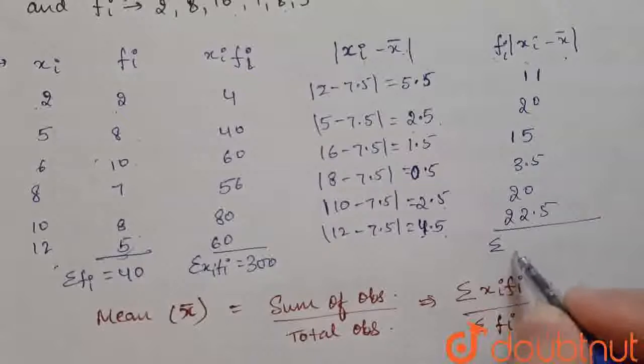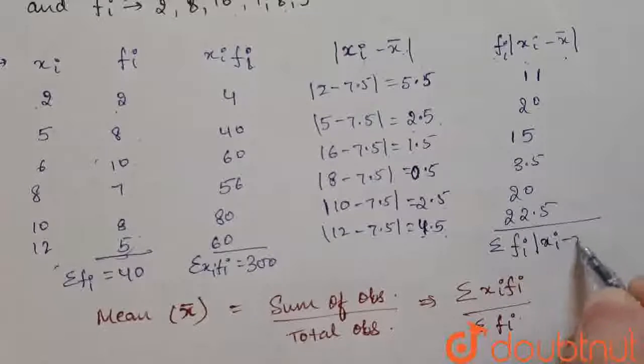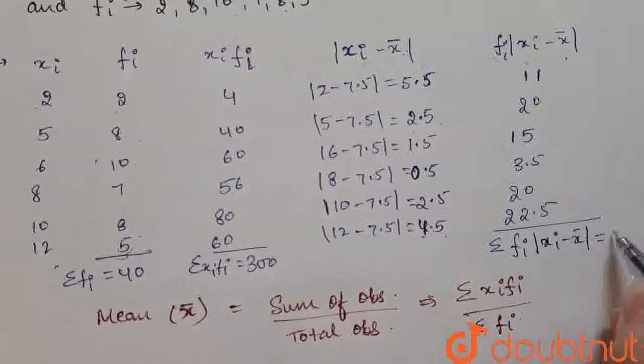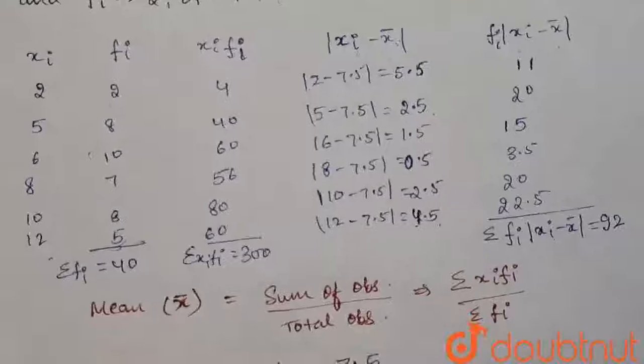Now, we will calculate the summation of fi into xi minus x bar. The summation of this is 92. On adding this term, we will get 92.